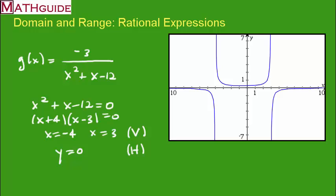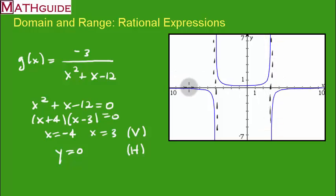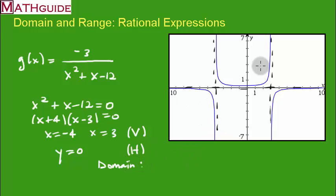Examining the diagram, the asymptotes match our algebra. We can see x equals negative 4 as a vertical line, x equals 3 as another vertical line, and the x-axis as the horizontal asymptote. Now let's use this to determine the domain and range. There are three branches in this discontinuous curve: a left branch, a middle branch, and a right branch.